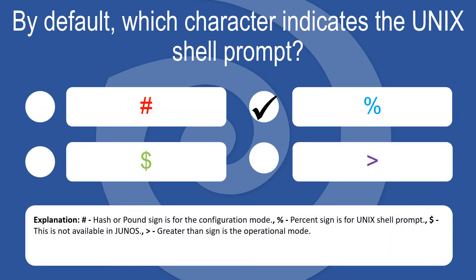The hash or pound sign is for configuration mode. The percent sign is for the Unix shell prompt. Dollar is not available in Junos. The greater-than sign is for operational mode.